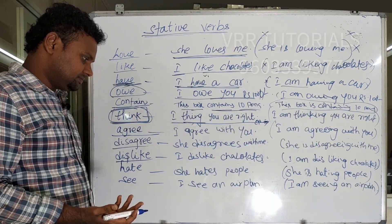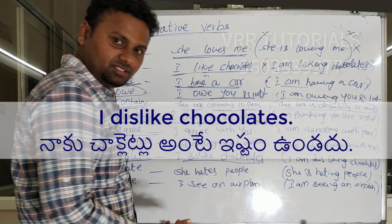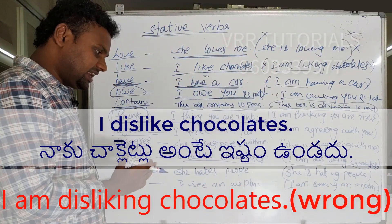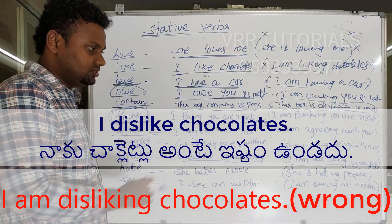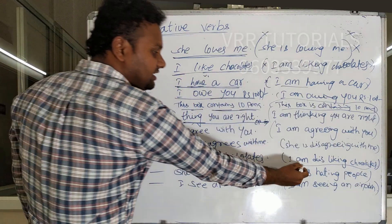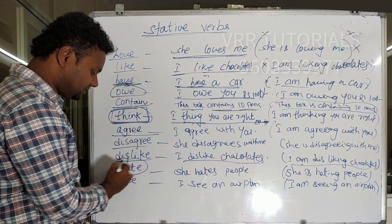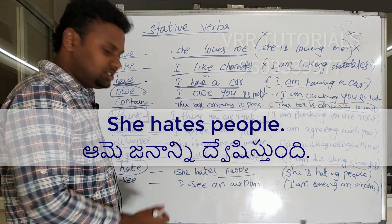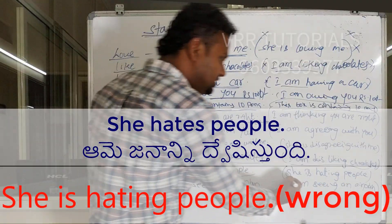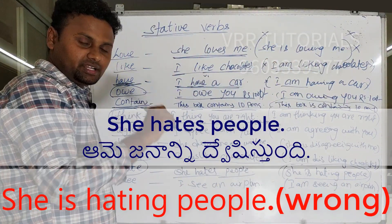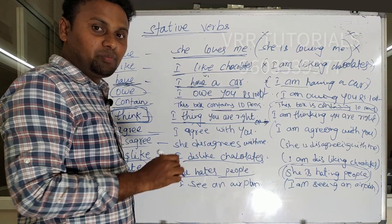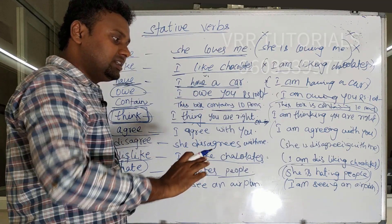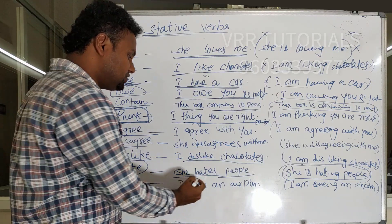Next: 'dislike.' I dislike chocolates. Don't say 'I am disliking chocolates.' So: I dislike chocolates. Next: 'hate.' She hates people — that is correct. Saying 'she is hating people' is incorrect. Don't say 'she is hating people' even though it is continuous. She hates people.